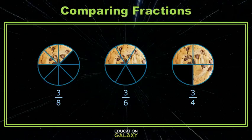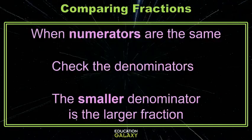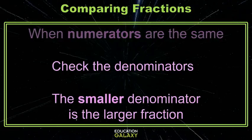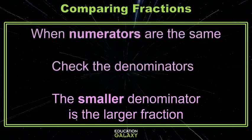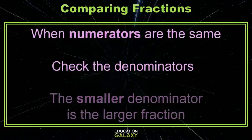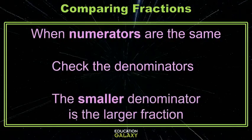So what did we learn about comparing fractions when the denominators are different but the numerators are the same? When the numerators are the same, we check the denominators. The smaller denominator is the larger fraction. Okay, now you try. Bye-bye.